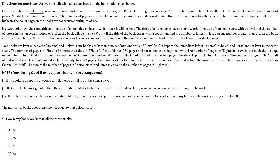Certain number of books are selected one above another in three different stacks P, Q and R, from left to right respectively. The number of books in each stack is different and each book has different number of pages. No stack has more than 12 books. The number of pages in the books in each stack are in ascending order, such that the lowest book has the least number of pages and the topmost book has the highest.